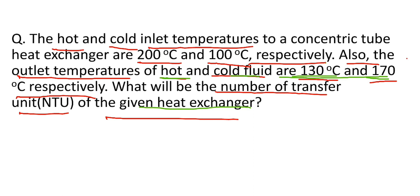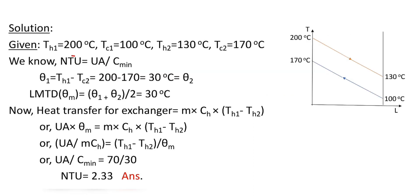I hope you have understood till now. Now let's go for the solution. Here TH1 is the inlet temperature of the hot fluid and TC1 is the inlet temperature of the cold fluid. TH2 is the outlet temperature of the hot fluid and TC2 is the outlet temperature of the cold fluid. These values are given in the question.